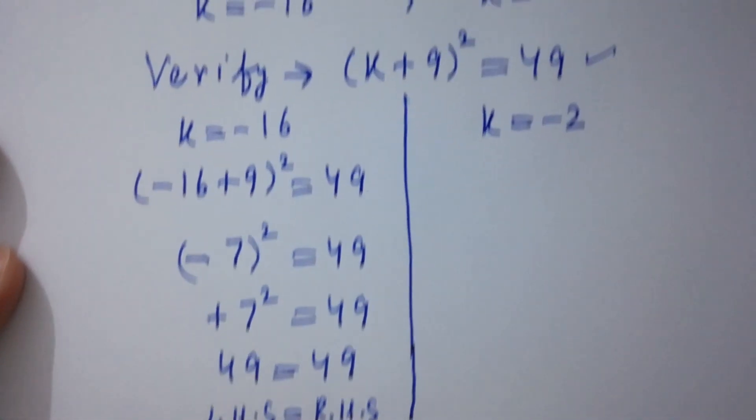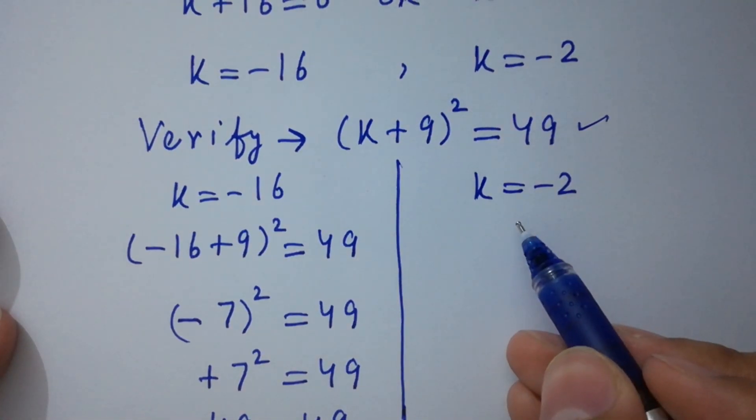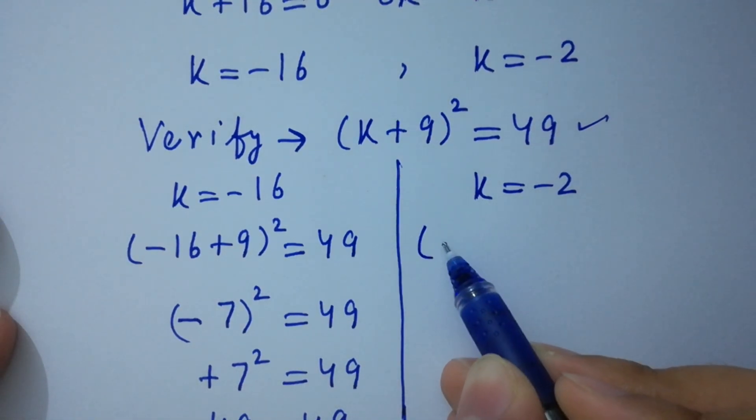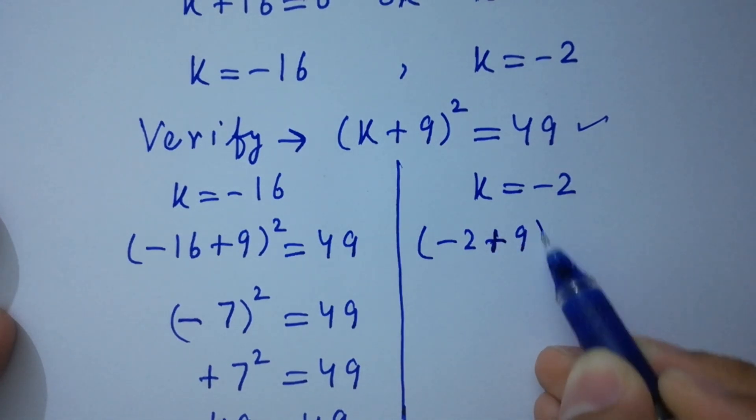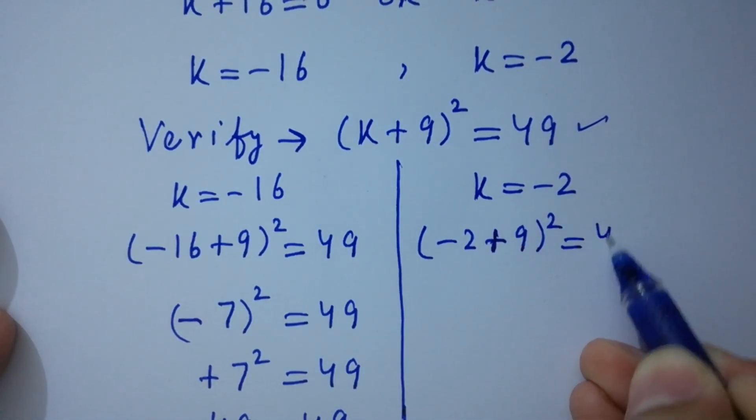And here, if we put k = -2 into this, we have here (-2 + 9)² = 49.